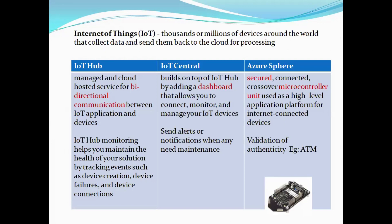The first topic is Internet of Things. Whatever devices you have — a laptop, a mobile, or any kind of device — if it collects data and sends it back to a cloud environment, those are called Internet of Things. We have three kinds: IoT Hub, IoT Central, and Azure Sphere. IoT Hub is mainly used for bi-directional communication between any IoT application and your device. It helps maintain the health of your solution by tracking events such as device creation, device failure, or device connections.